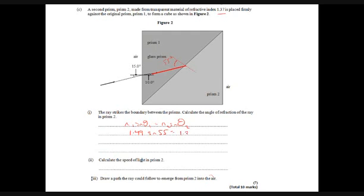So 1.37 times sine theta 2. So sine of theta 2 equals 1.49 over 1.37 times the sine of 55 degrees. And if you put that in your calculator, you'll find that is 63 degrees.